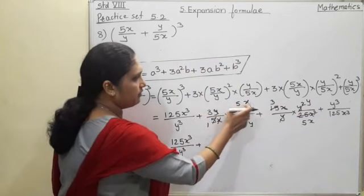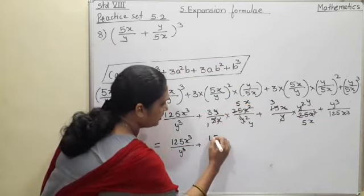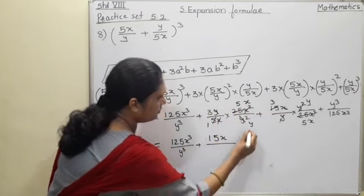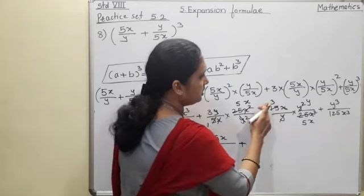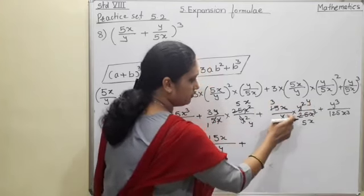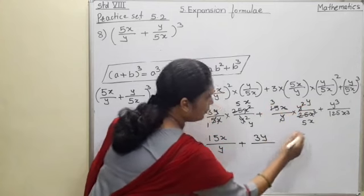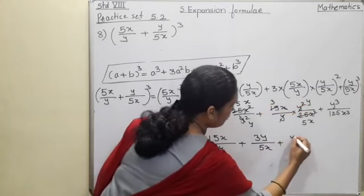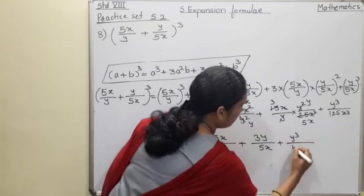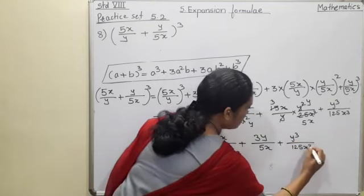That is 3 into 5x will be 15x/y plus, what is remaining? 3 and y remaining in between multiplication, so 3y/5x plus y³/125x³.